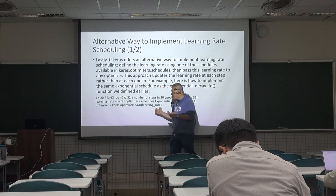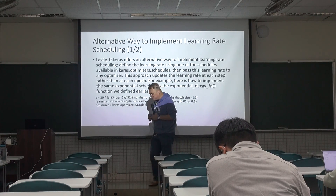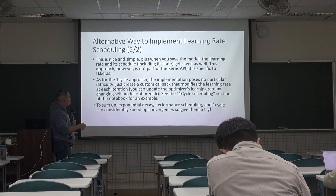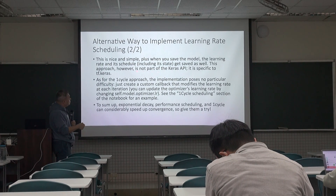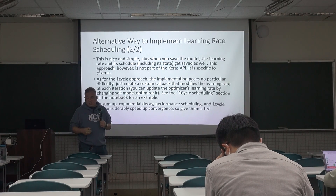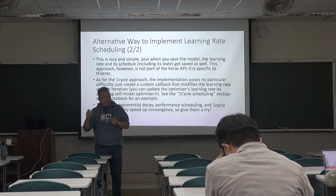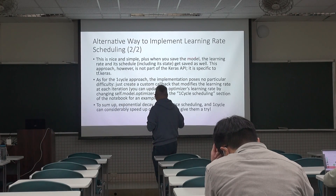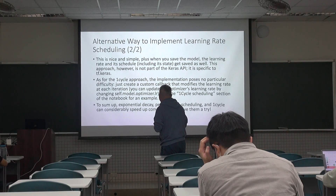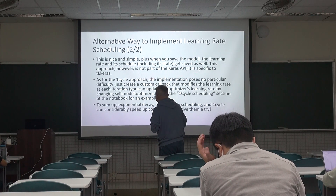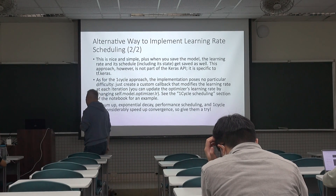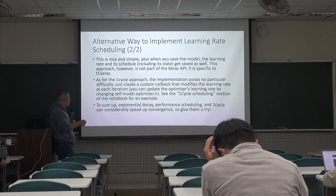You pass all these hyperparameters and then pass the learning rate object to the optimizer. The advantage of this approach is that when you save the model, the learning rate and its schedule, including state, get saved as well — so you don't need to worry about the initial epoch. However, this approach is not part of the standard Keras API; it is defined by tf.keras, so only TensorFlow Keras has it.